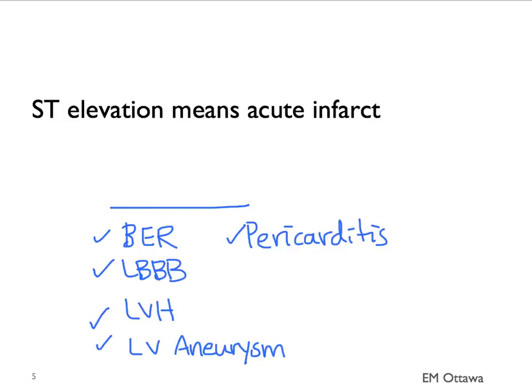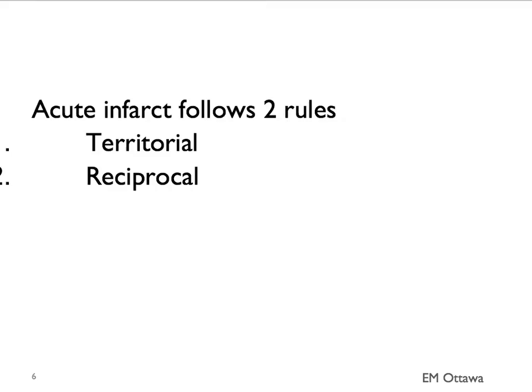We'll look at the criteria to decide whether this is infarction versus pericarditis. For now, let's look at ST elevation in patients with acute myocardial infarction and learn their patterns. Acute myocardial infarction follows two rules on the ECG: first, it's territorial; second, there are reciprocal changes.